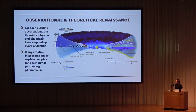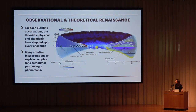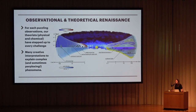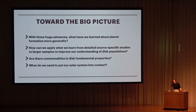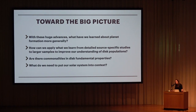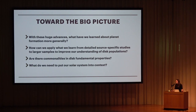This decade of data has been met with a true theoretical renaissance to match. For each of these puzzling observations of interesting exotic disk structures or parameters — both physical and chemical features — theorists have come up with very creative explanations. These interpretations can often explain and match data to sometimes very complex and perplexing phenomena. We want to step back with this chapter and figure out what we have actually learned. What is the big picture?